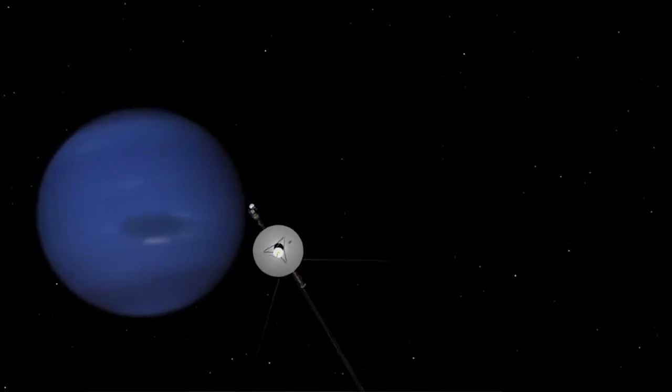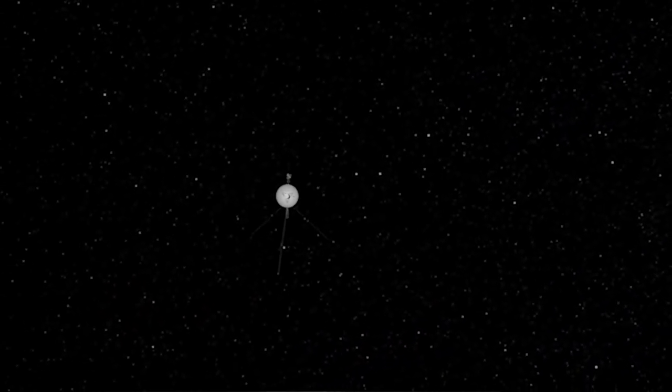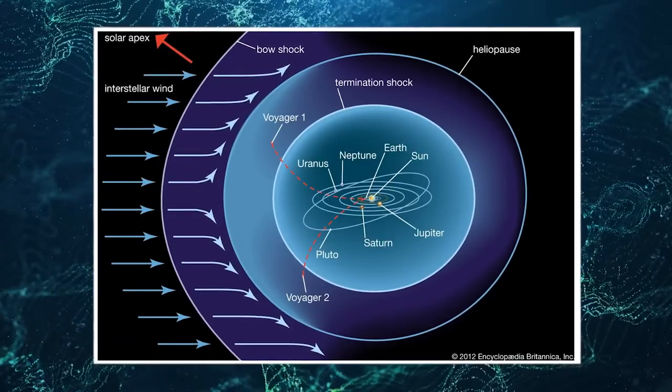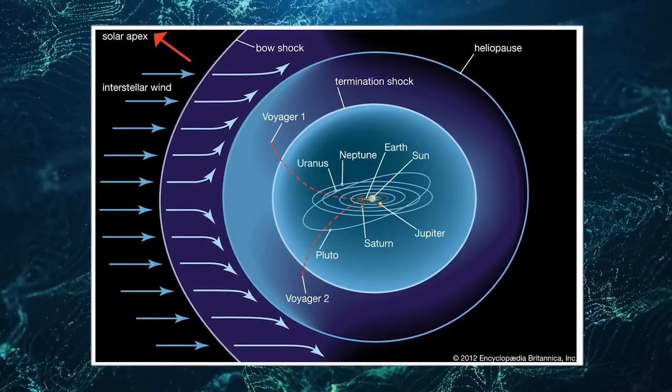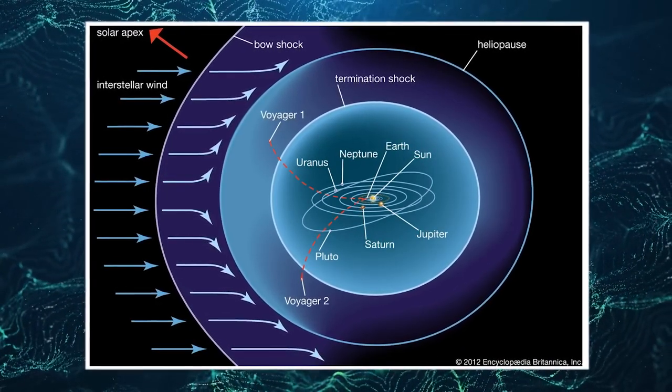NASA's Voyager spacecraft has uncovered terrifying new information about the vast and empty expanse of interstellar space. According to NASA, cosmic rays are three times more intense outside of the heliopause, the protective bubble around our solar system, than inside it.